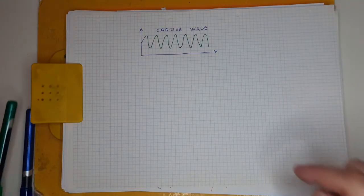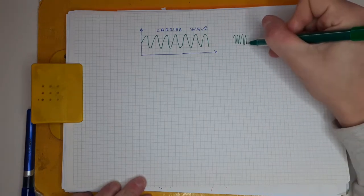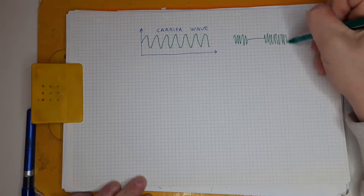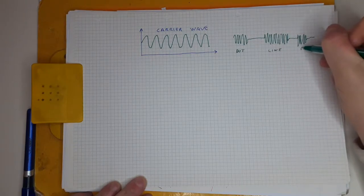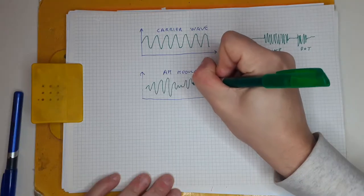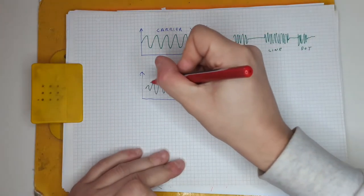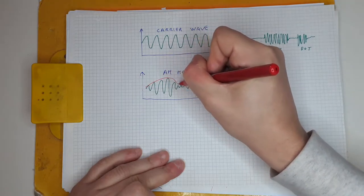To transmit the human voice through radio we need two things. The first is a carrier — a wave of appropriate frequency for the type of data we want to transmit. We can also communicate using only the carrier with Morse code, turning the carrier on and off for a certain amount of time. If we want to transmit the human voice, we must necessarily modulate the carrier, which means imprint our voice signal over the carrier.